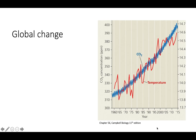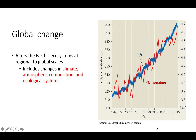The last threat to biodiversity is global change. Global change alters the earth's ecosystems at either a regional or global scale through changes in climate, atmospheric composition, and ecological systems. On the right we can see a graph of the atmospheric concentration of carbon dioxide over the past several years, as well as the rate at which global average temperatures have been changing.